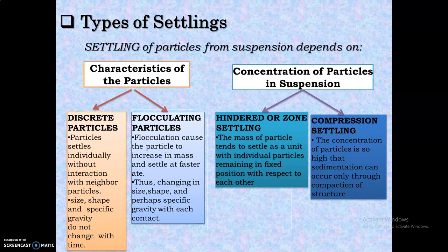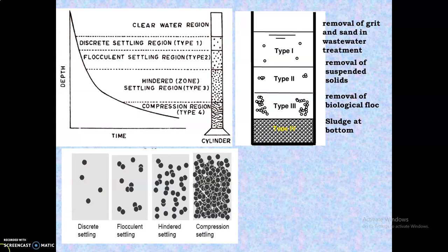In discrete particle settling, particles settle individually without interaction with neighboring particles. The size, shape, and specific gravity do not change with time. Each particle, because of its own weight, settles down without needing any external force. Since the particles are individual, they settle down easily. This is called discrete particle settling.